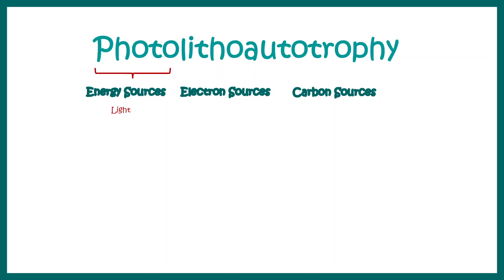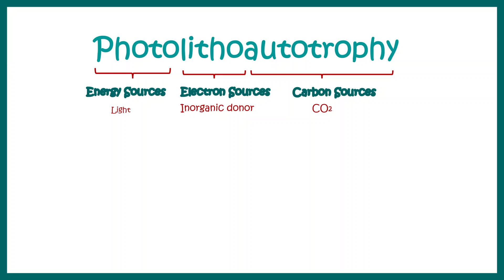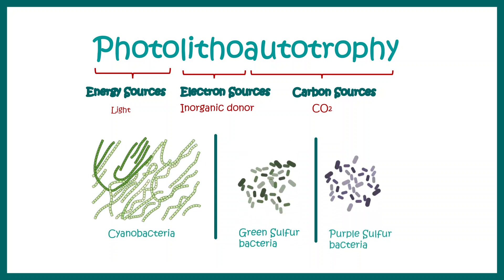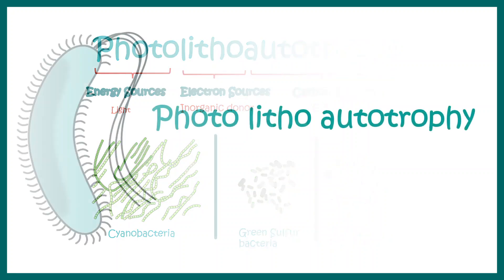For example, 'photo' means the energy is derived from light. The electron sources are derived from inorganic donors when we see the term 'litho,' and 'autotrophy' means the carbon source is CO2. Many bacteria fall under this photo-litho-autotrophy category, like cyanobacteria, green sulfur bacteria, and purple sulfur bacteria.